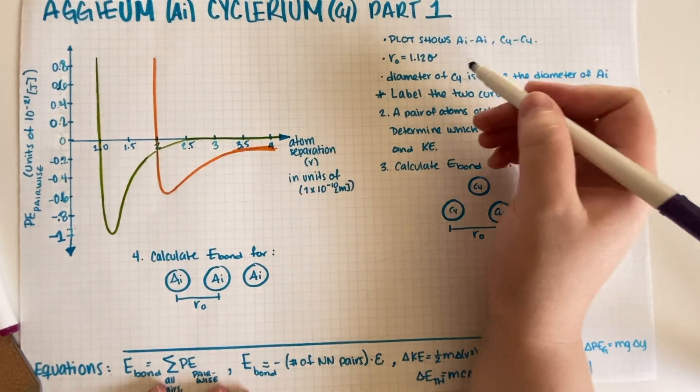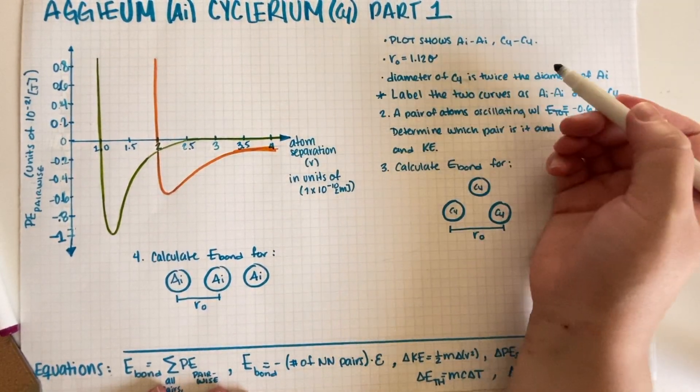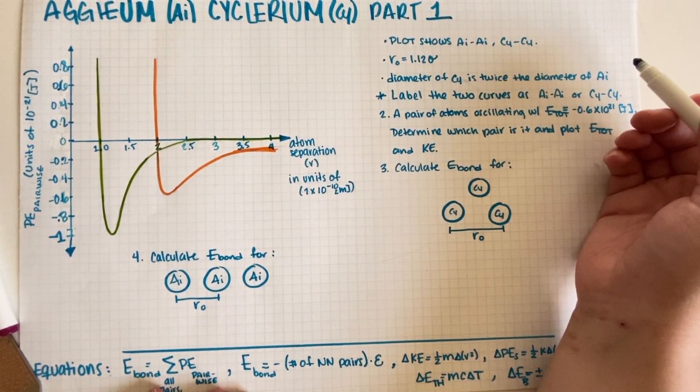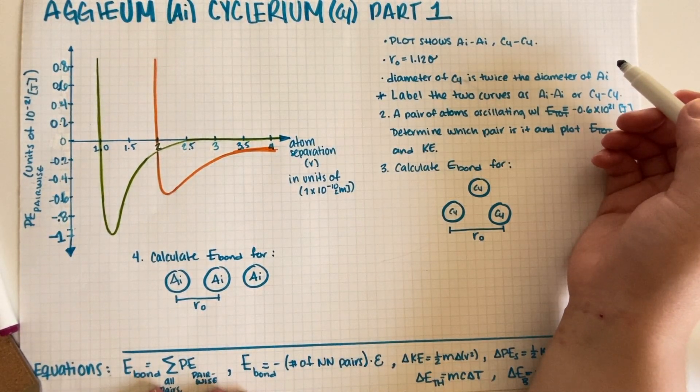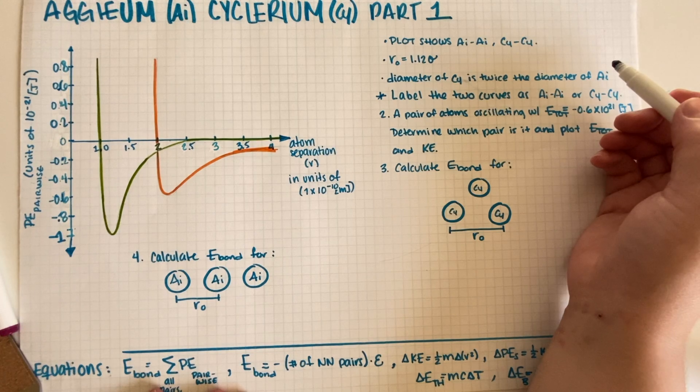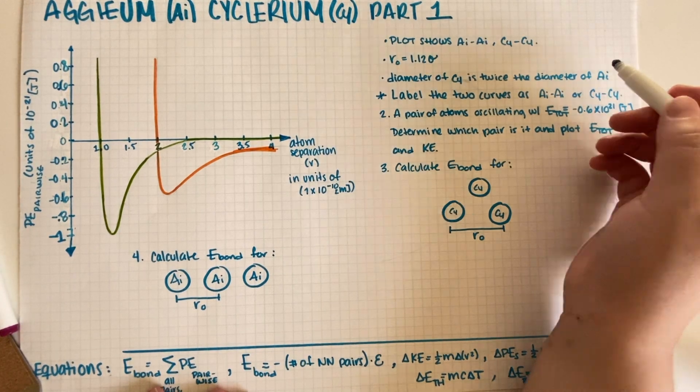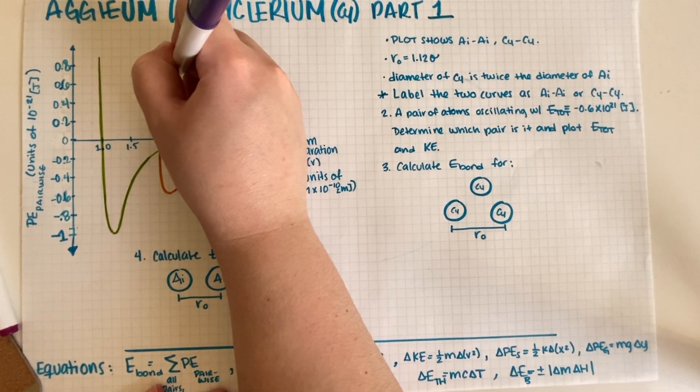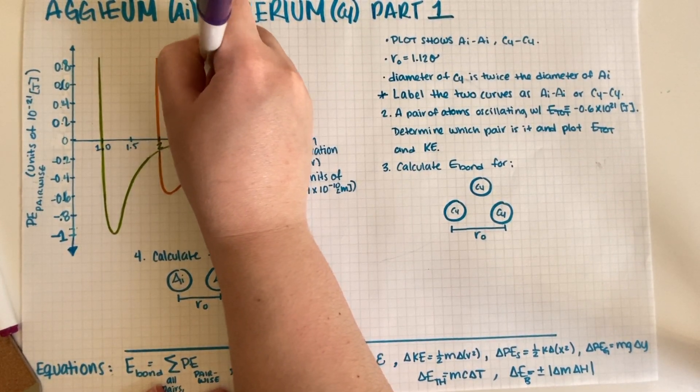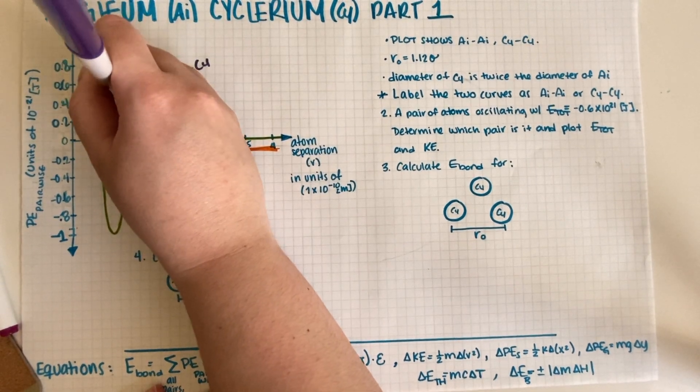The diameter of Cy is twice the diameter of Aegeum, so twice that means that Cy is greater. So this one must be the Cy-Cy and then this one must be the Ai-Ai.